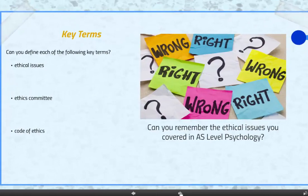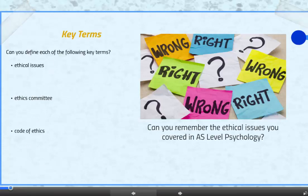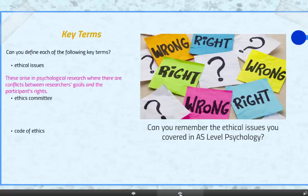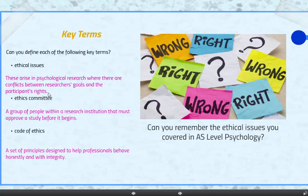So firstly, key terms. What do we mean by ethical issues? What do we mean by an ethics committee, and what is our code of ethics? Ethical issues arise when there's conflict between the researcher's goals and the participant's rights. An ethics committee is a group that must approve the study before it begins. And our code of ethics is our principles to help professionals behave honestly and with integrity.